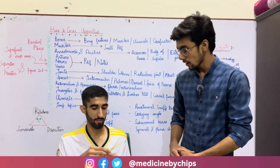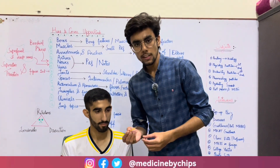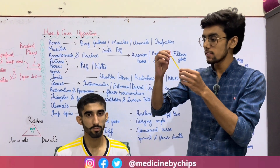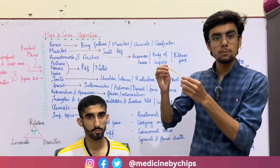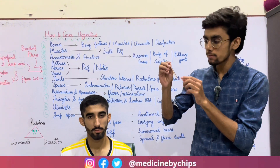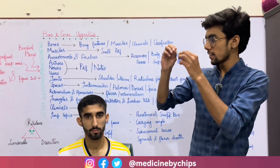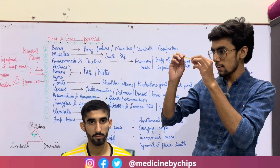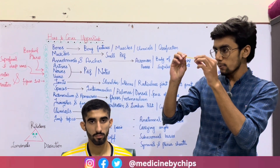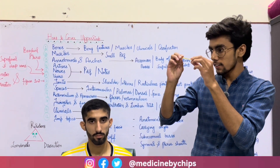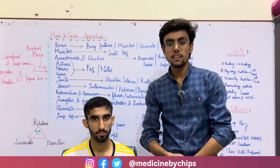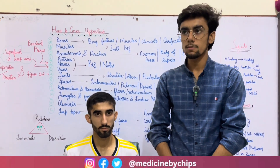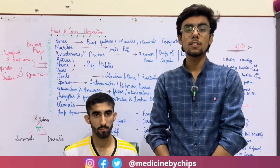We ask the patient to remove the thermometer from the axillary region and we check the rise in the mercury column. The temperature of our subject is 98.2 degrees Fahrenheit, which is approximately normal, since the normal body temperature is 37 degrees Celsius or 98.6 degrees Fahrenheit.